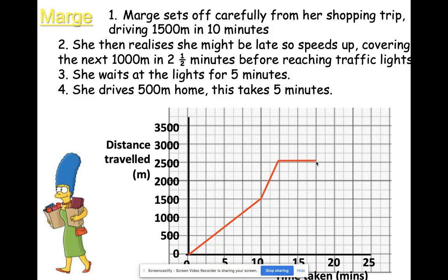Finally, she drives 500 meters home taking five minutes. Another five minutes after 17.5 minutes is 22.5 minutes, and 500 meters more takes us to 3000 meters. There's a small error on screen — it should actually be where my arrow is pointing. She drives 500 meters home in five minutes — yes, that's right, where my arrow is.